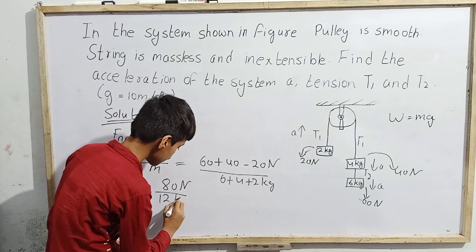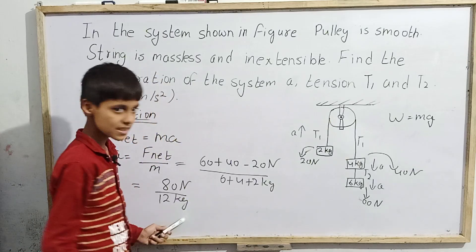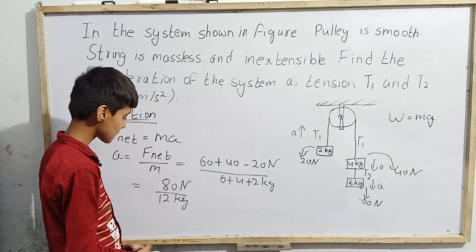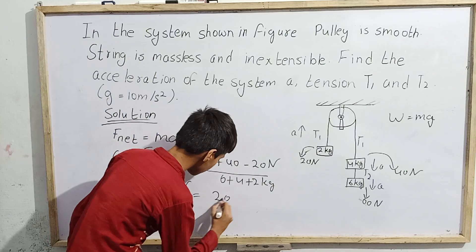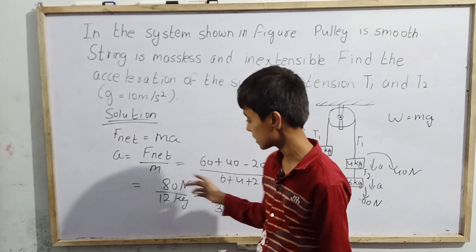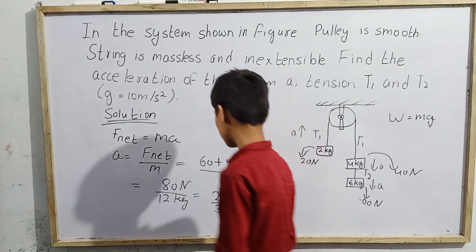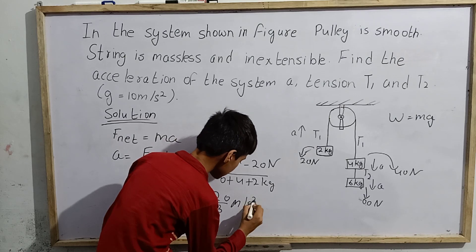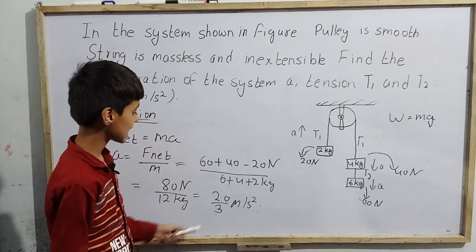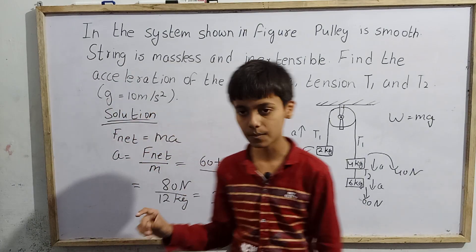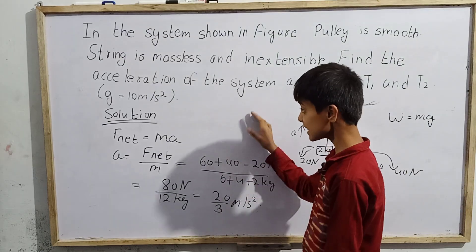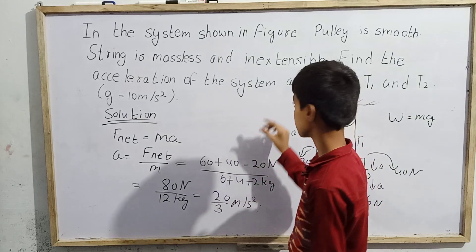So acceleration = 80 N ÷ 12 kg. Simplifying by dividing numerator and denominator by 4: 80/12 = 20/3. Therefore acceleration of the system is 20/3 meters per second square.